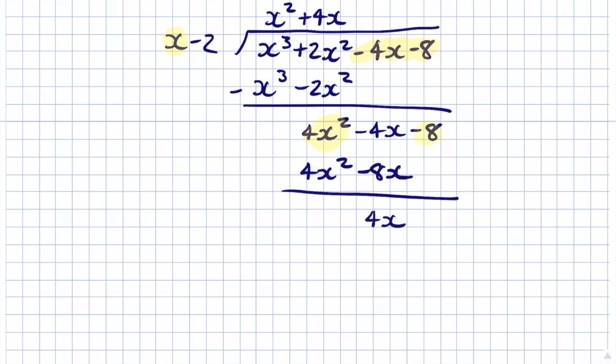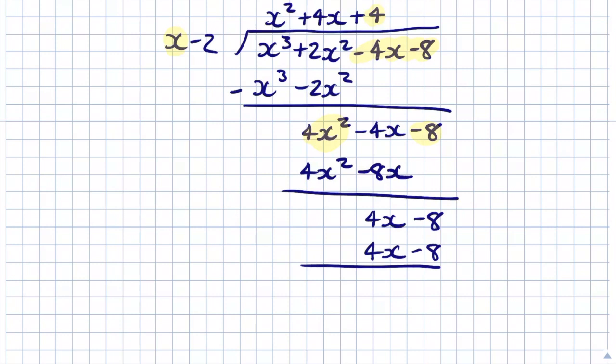Then x goes into 4x giving 4. Multiply 4 by (x - 2): 4x and -8. Subtract: 4x - 4x = 0 and -8 - (-8) = 0. So our remainder is equal to 0, confirming exact division.